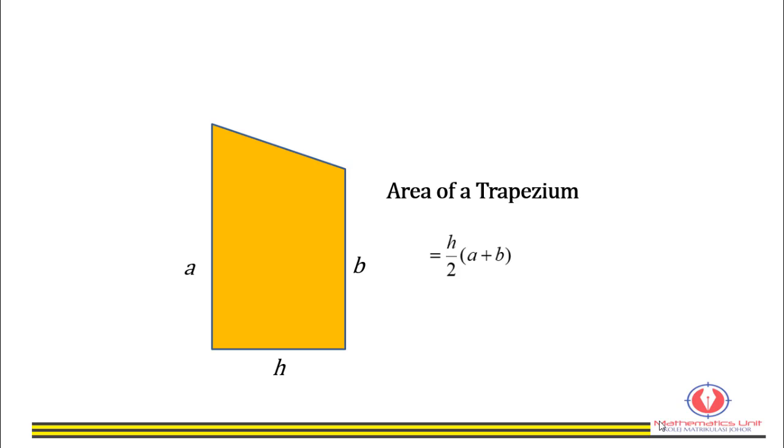Let's look at the following trapezium. The area is given by h over 2 multiplied by a plus b, where h is the height or width of the trapezium, and a and b are the lengths of the parallel sides.